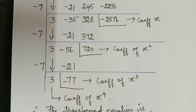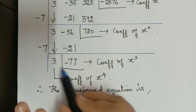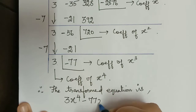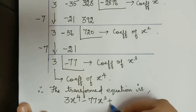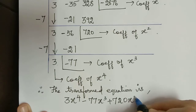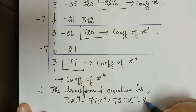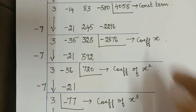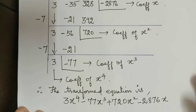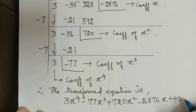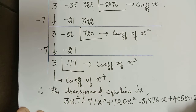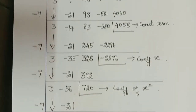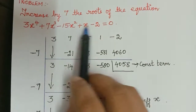Therefore the transformed equation is 3x to the power 4, minus 77x cubed, plus 720x squared, minus 2876x, plus 4058 equals 0. This is the transformed equation obtained after increasing the roots of the given equation by 7.